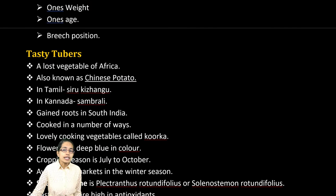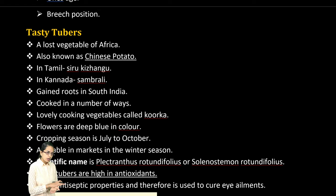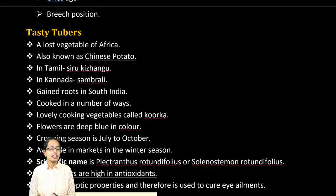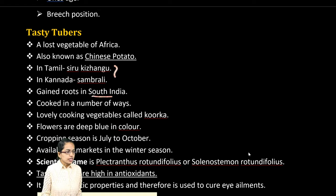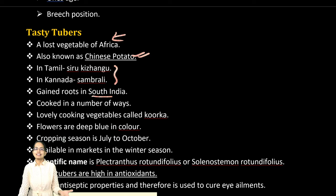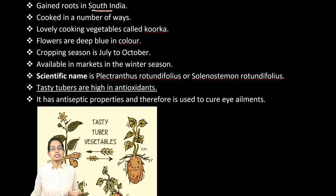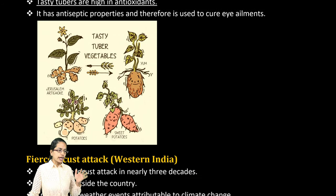Tubers are fruits found underground. In South India and various parts of the country, they are known by various names — Chinese potato is one common name, and it is also known as the lost vegetable of Africa. The flowers are deep blue in color and the cropping season is July to October. They have high amounts of antioxidants, antiseptic properties, and are useful for eye ailments.